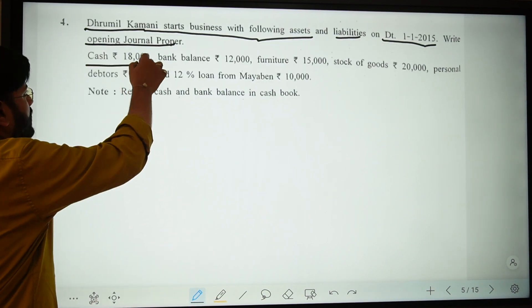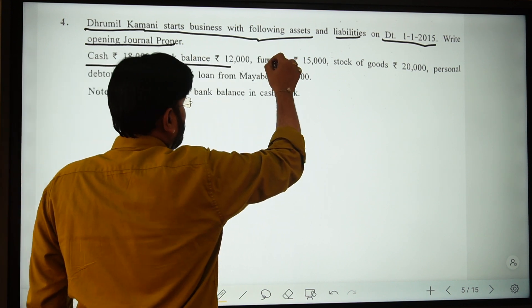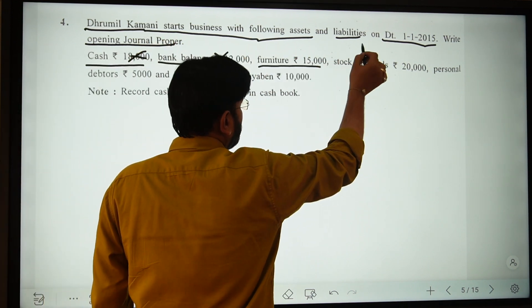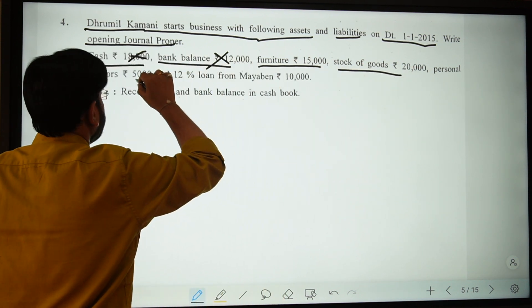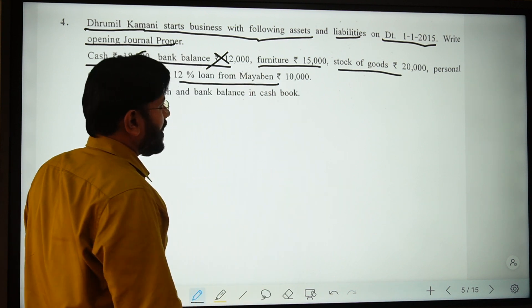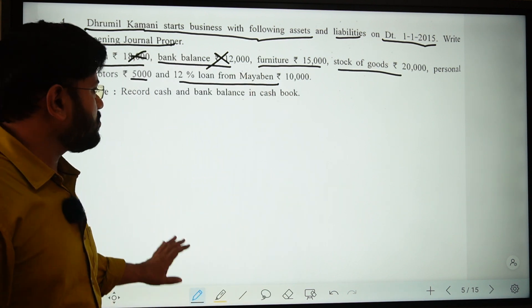Cash is 18,000, Bank is 12,000, Furniture is 15,000, Stock is 20,000, Personal debtors is 5,000. The liability is a loan from Mayab of 10,000. So, first of all,